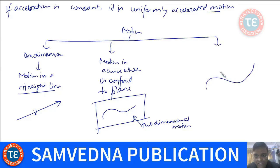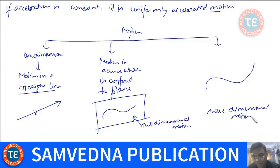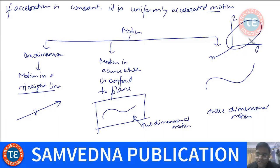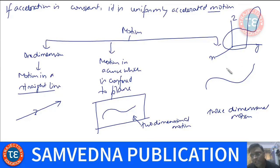If the body is moving in a curve such that the curve is not confined to a single plane — the curve does not lie in a single plane — then we say it is three-dimensional motion. For example, in a three-dimensional coordinate system if the body moves in a path that is not confined to a single plane, it is three-dimensional motion.